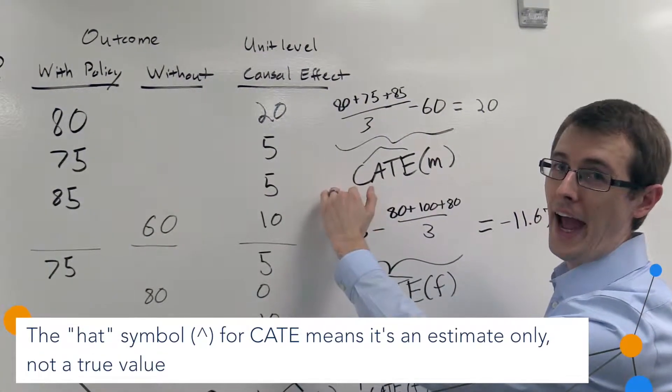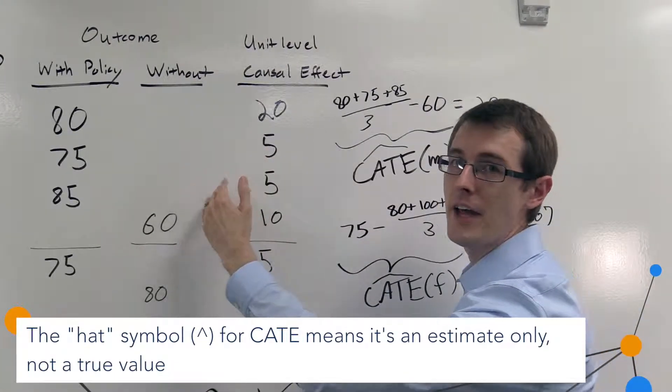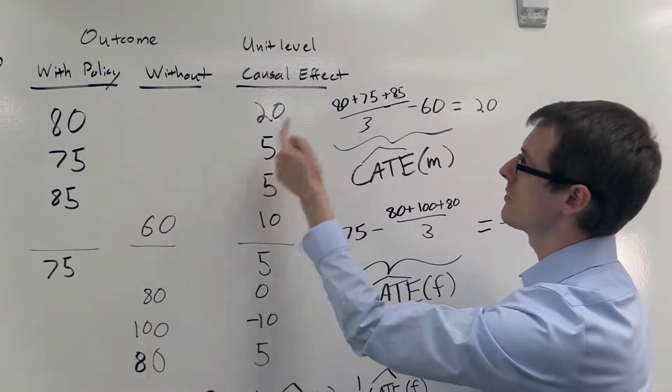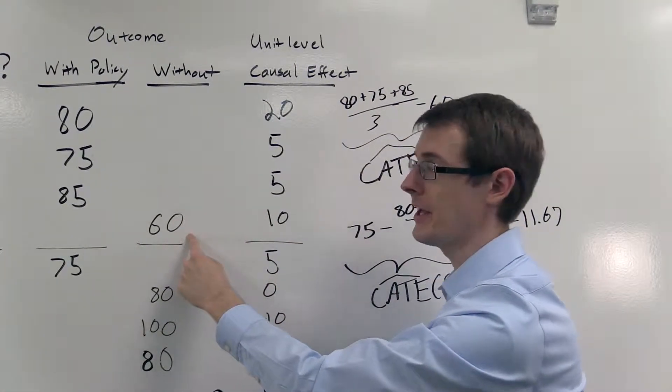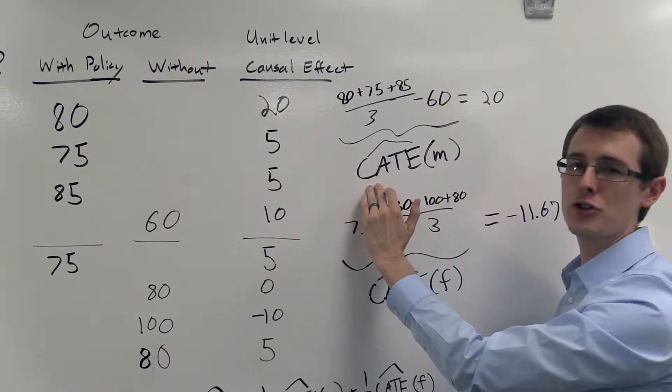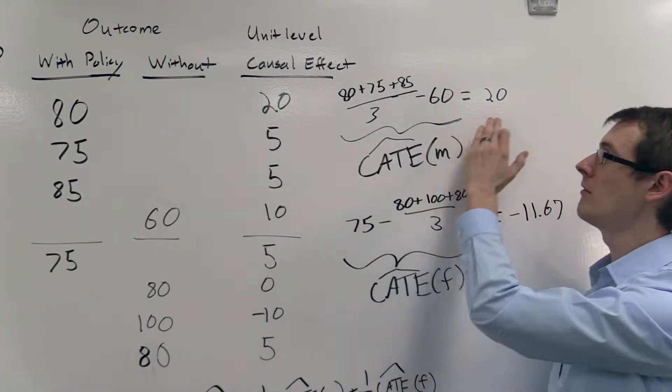We can do the same thing for men. We take the average among men of the outcomes who were treated, get this number here, subtract off the average outcomes for men who weren't treated, and that gives us an estimate of the conditional average treatment effect for men of 20.